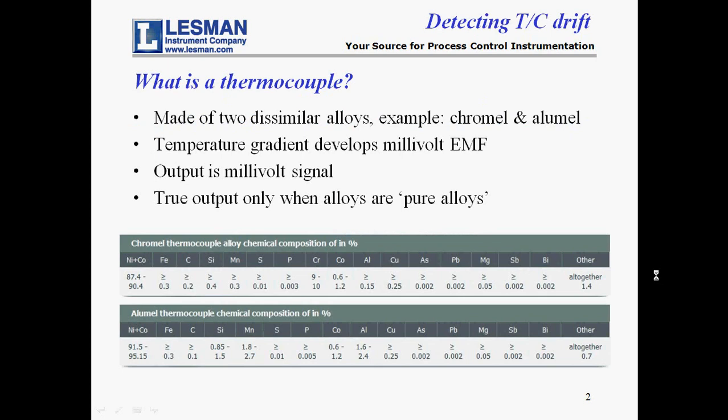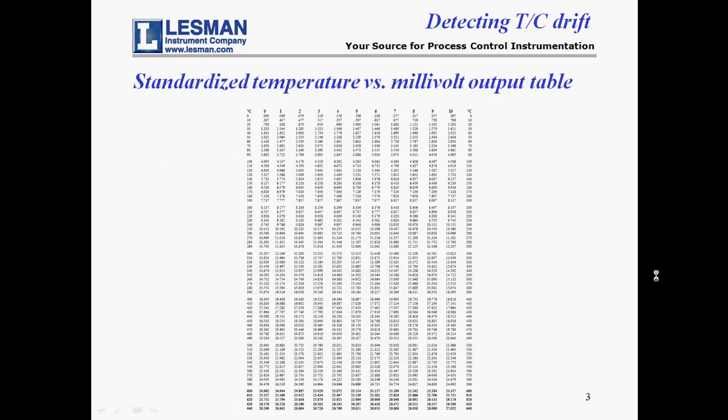A thermocouple is made of two wires of different alloys, commonly called the dissimilar metals. For instance, a K-type thermocouple is made from chromel and alumel alloys. The alloys produce an electrical millivolt signal that varies with temperature. The pure alloys that form the thermocouple's junction have a low electrical resistance and the thermocouple's output is true as long as the alloys remain pure. The temperature versus millivolt values generated by a thermocouple are published in standardized reference tables. Electronic instruments use these tables to produce temperature measurement values.